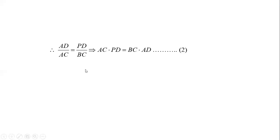Equation 2: From the similarity, AD/AC = PD/BC. That means AC · PD = BC · AD.